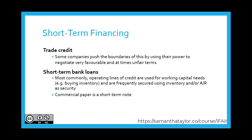Short-term bank loans, most commonly operating lines of credit, are used for working capital needs — for example, buying inventory — and are frequently secured by using inventory and/or accounts receivable as security. These are often set up where the limit is a percentage of the collateral, for example 75 or 70% of the accounts receivable balance.